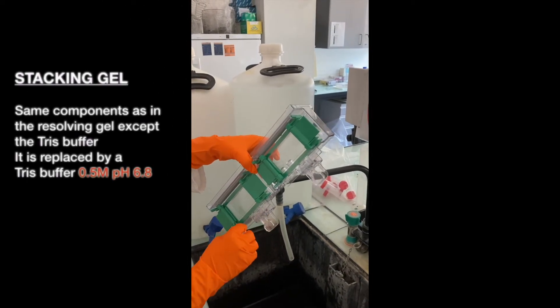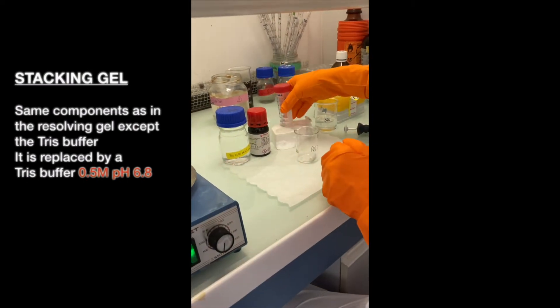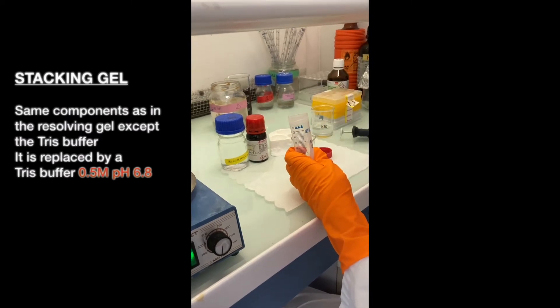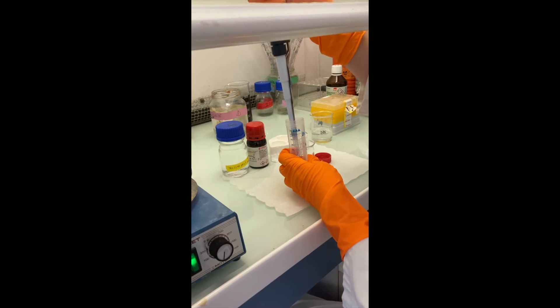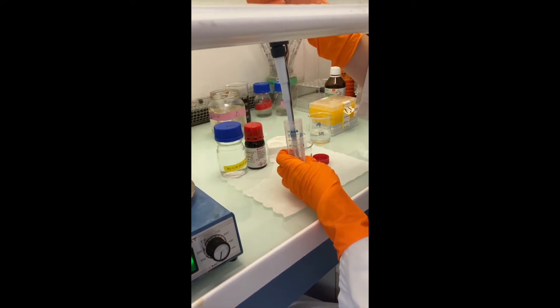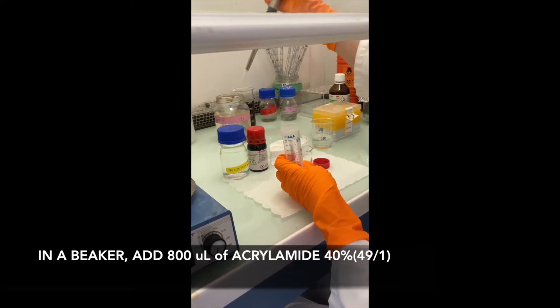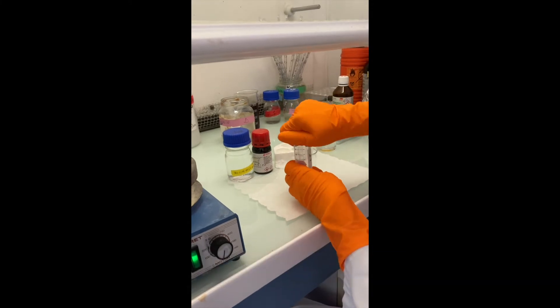The stacking gel will contain the same components with the exception of the tris buffer which will be set at pH 6.8 and 0.5 molar. In a beaker with a stirrer, add 0.8 milliliter of acrylamide 40% ratio 49:1.